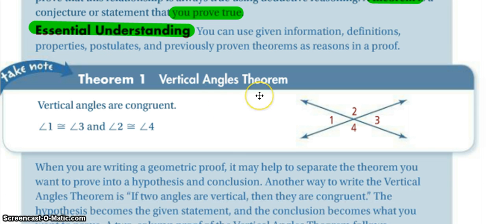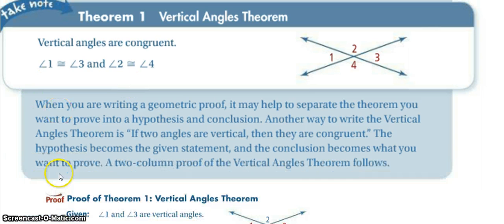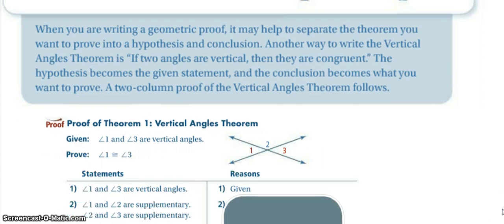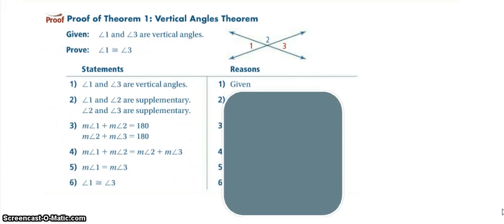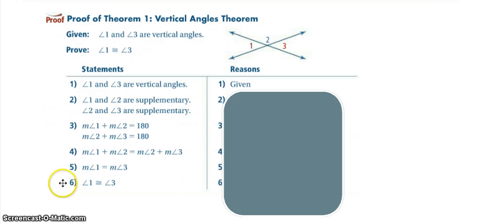Our vertical angles theorem — hopefully you know about vertical angles and how we have proven them to be true — angles one and three would be vertical angles and two and four would be vertical angles, so we know that they are congruent. Go ahead and read through this, and then we're going to look at a proof for vertical angles. We are told that one and three are vertical angles, but we want to prove that they're actually congruent.